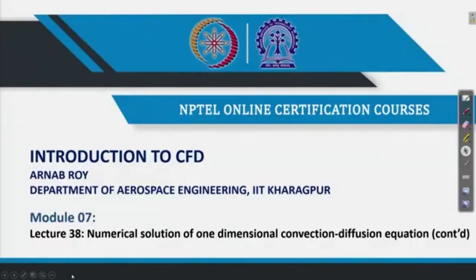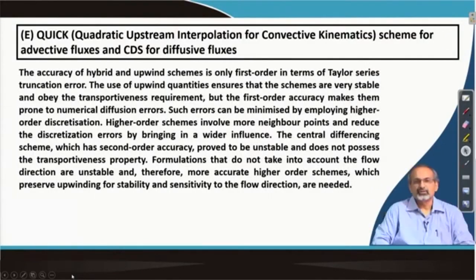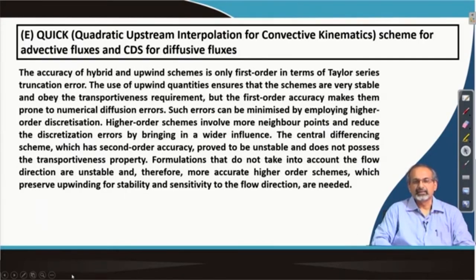In this lecture, we will complete our discussion on the one-dimensional convection-diffusion equation. The last lecture concluded with a discussion on the QUICK scheme, where we saw that we use a quadratic fit using three nodal points in order to reconstruct the value of phi at an interface.